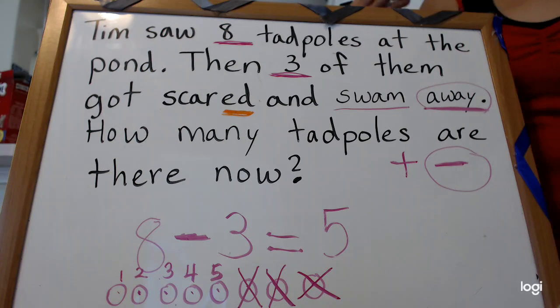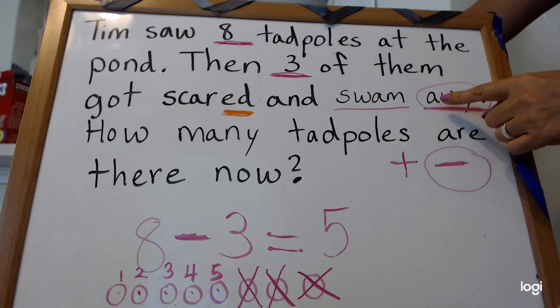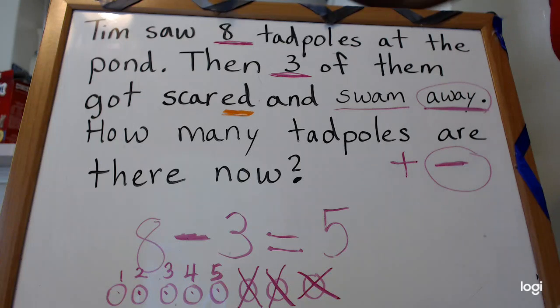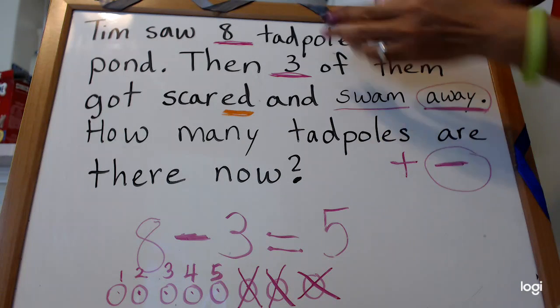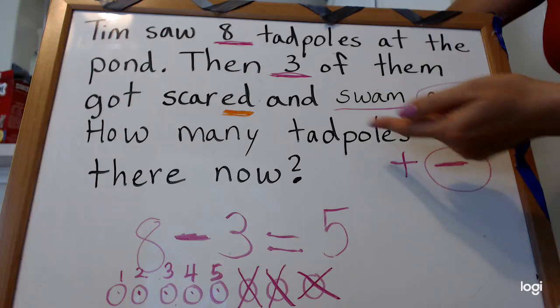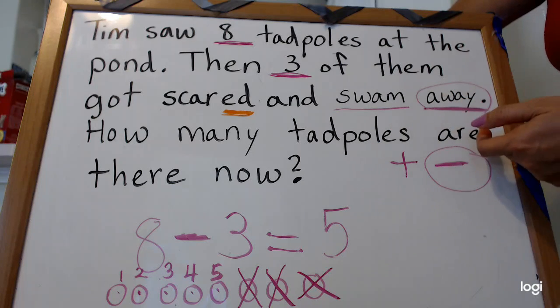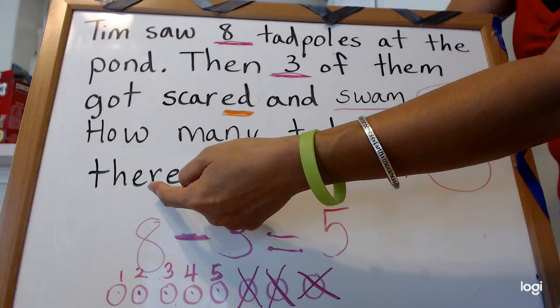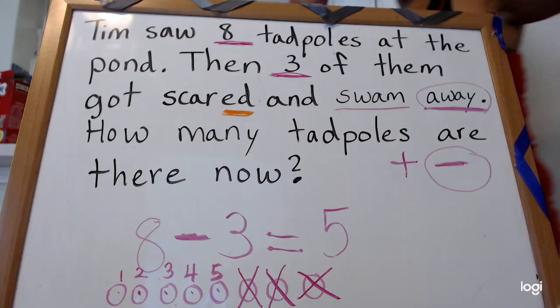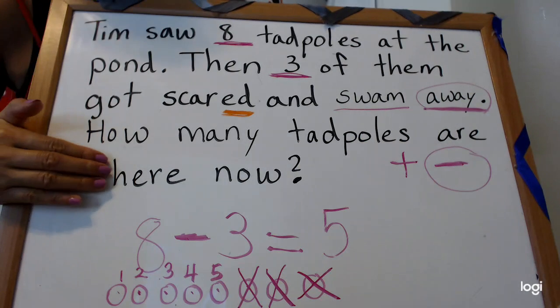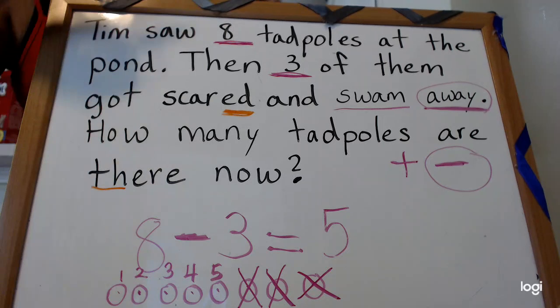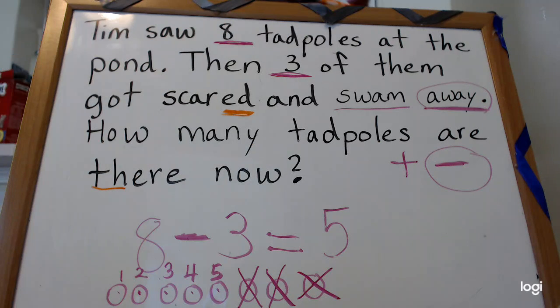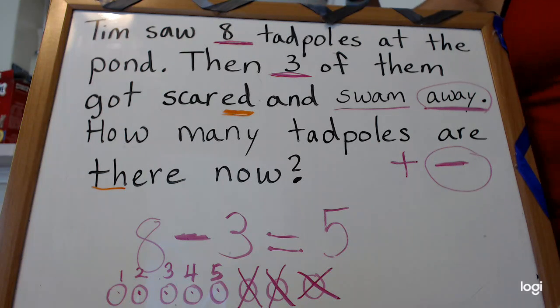Okay, 'away'. This is one of your power words, 'how', power word, 'many', 'tadpoles' same word every time you solve a word. Remember it so you can read the next word. 'Are' is your power word. 'There', the word 'there', right, because it has the word 'here', but T-H is for 'there', right? 'Now'.